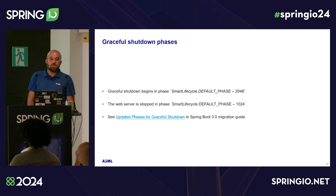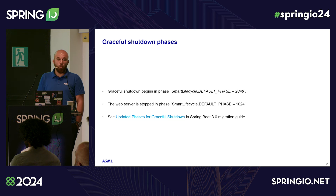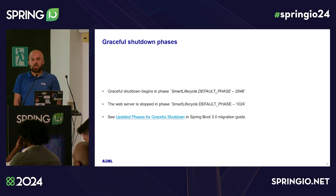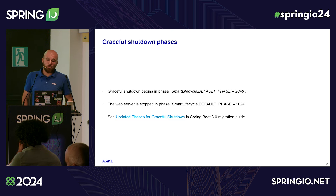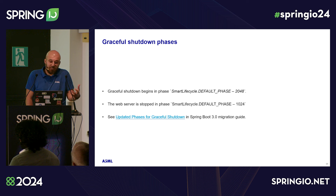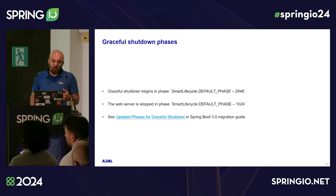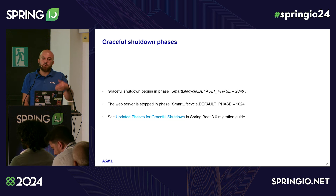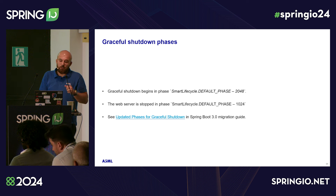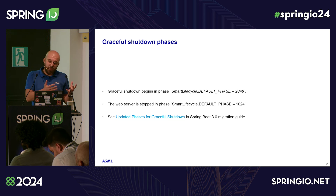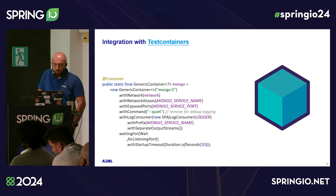We also had changes in graceful shutdown phases. In our services we use custom SmartLifecycle because the default graceful shutdown is 30 seconds, and some of our sync tasks may take longer. We had to update those custom SmartLifecycle beans, considering that the graceful shutdown begin phase is now 2048 and stops at 1024 — going from highest to lowest. So if you want to run custom logic before the application's graceful shutdown, you must set the phase accordingly.